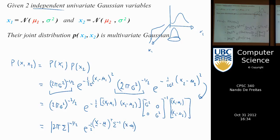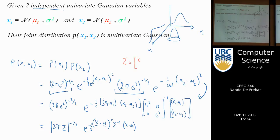In this formula, my Σ is equal to the diagonal matrix with σ² entries and zeros off-diagonal. My μ vector is (μ₁, μ₂), and my X vector is (X1, X2).